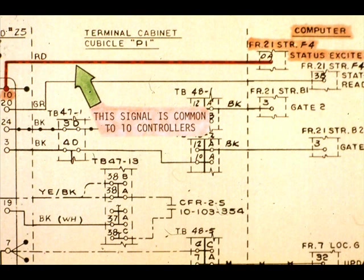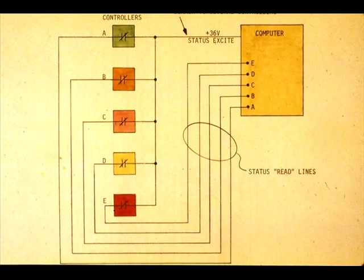The status excite line comes from computer frame 21, strip F4, and is common to a group of eight controllers. Status excite is a positive voltage supplied by the computer to a group of controllers.